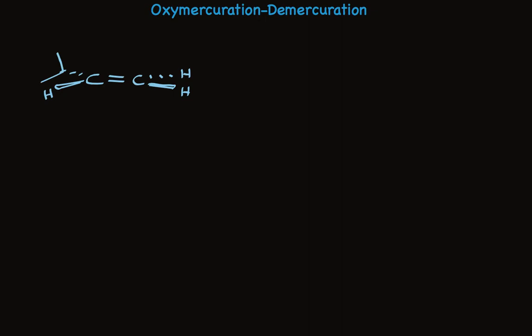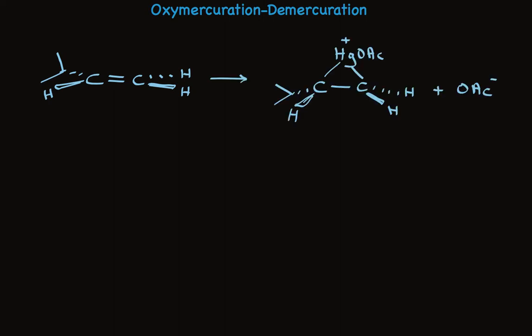I've drawn the alkene on its side so we can better see the top and the bottom of the pi bond. In the first step of this reaction, mercuric acetate adds an electrophile. The pi electrons react with the mercury to form something that looks very much like the bromonium ion we saw earlier. The mercury is associated with both carbon atoms that used to be part of the alkene carbon-carbon double bond.